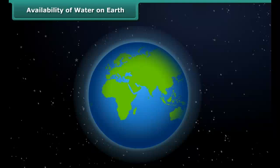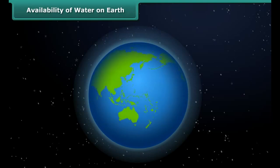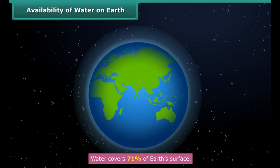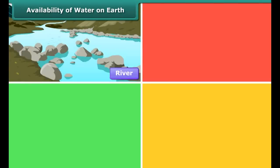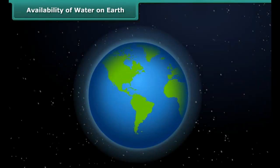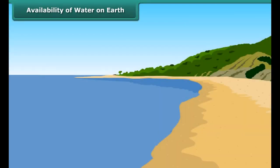You will also list the factors that lead to the depletion of the water table. Earth is called the blue planet — can you guess the reason? Yes, water covers 71% of earth's surface in the form of rivers, ponds, oceans, and streams, making it appear blue in color when seen from space. However, 97% of the total water on earth's surface is saline water,